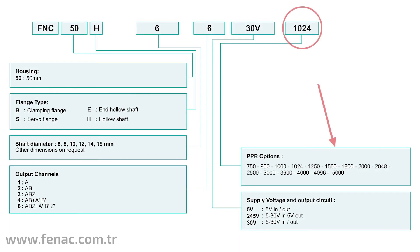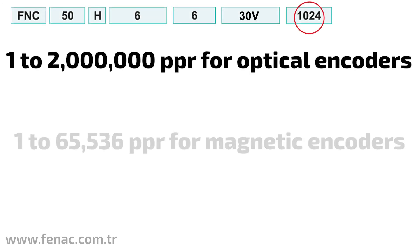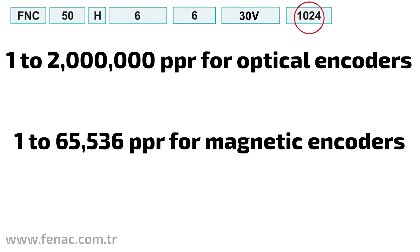Resolution selection: Fennec encoders can offer a resolution from 1 to 2 million pulses. You can choose the resolution according to the requirements of your application and the reading frequency of your reader.